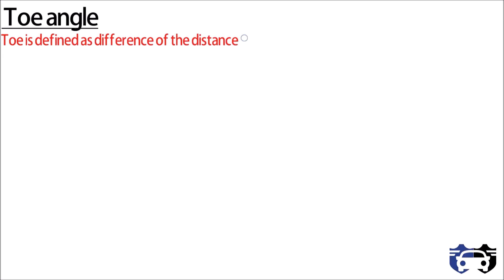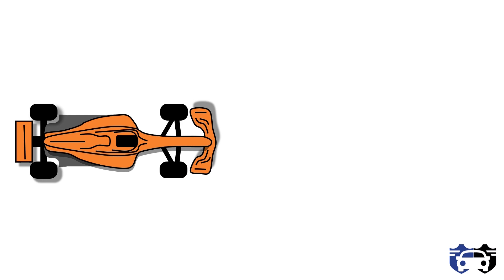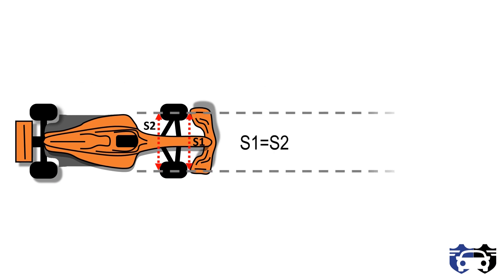Toe is defined as the difference of distance between the leading edge of the wheels and the distance between the trailing edge of the wheels when viewed from the top of the vehicle. The front edge of the tire touching the ground is called the leading edge and the rear edge is called the trailing edge. Let the distance between the center of the tire at the leading edge be S1 and at the trailing edge be S2.